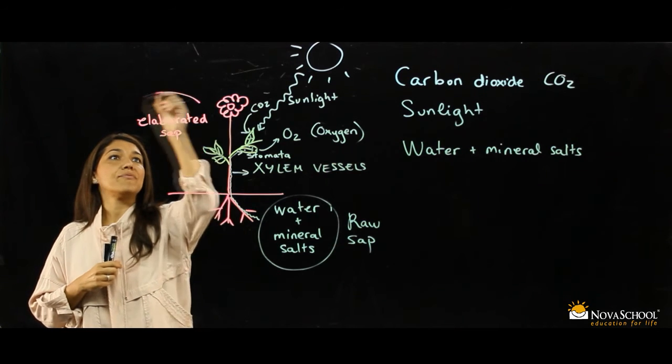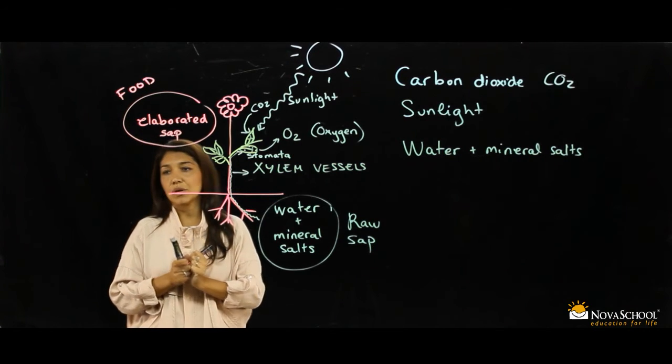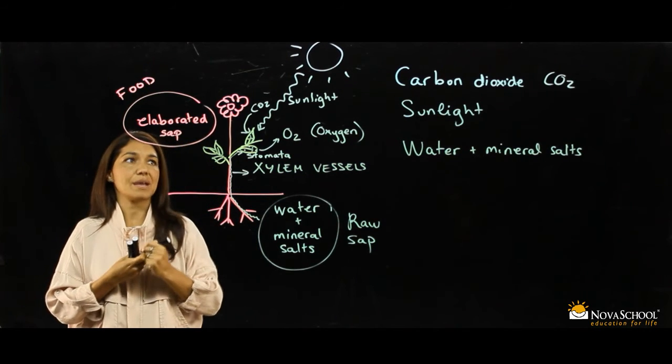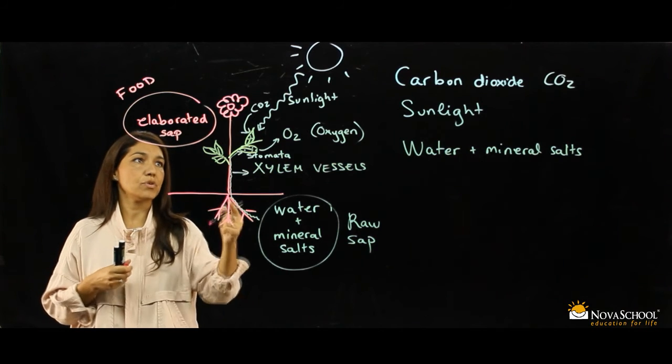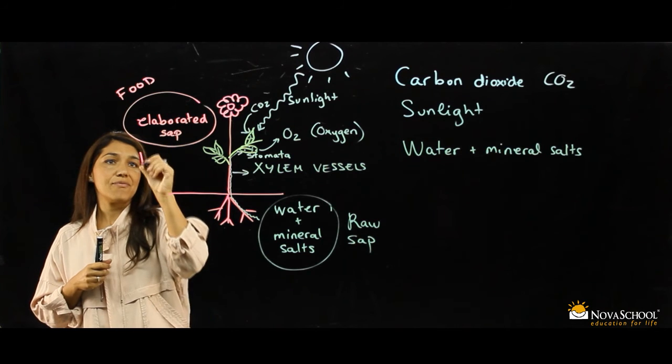And this is the food of the plant. This elaborated sap will go to all the parts of the plant which are not green, for example, the roots, the stem, the flower, through the phloem vessels.